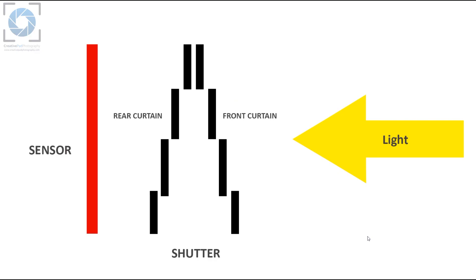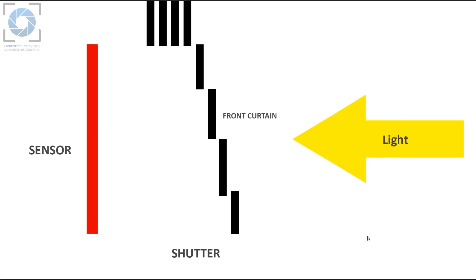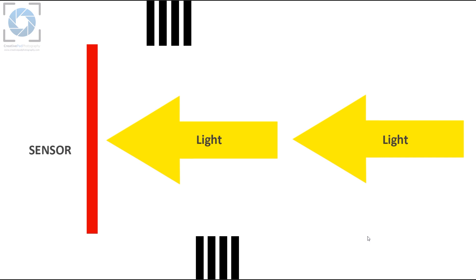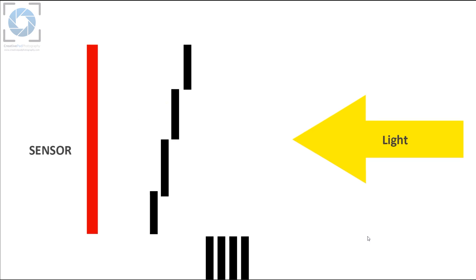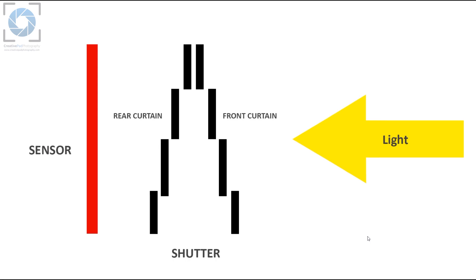A shutter comprises two curtains: the front curtain and the rear curtain. In a few seconds we'll be seeing a video of how the shutter looks and works, but first let's understand the mechanism. When you press the shutter button, the mirror goes up, then the rear curtain goes up and the front curtain goes down, allowing the light to pass and fall on the sensor. Then the rear curtain closes and the front curtain closes again to finish the exposure.